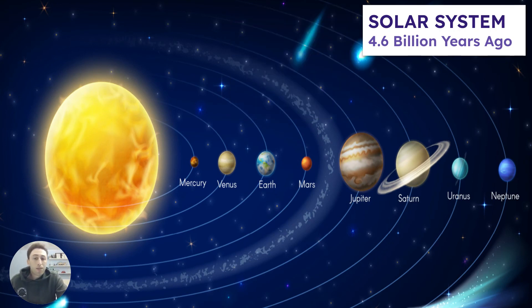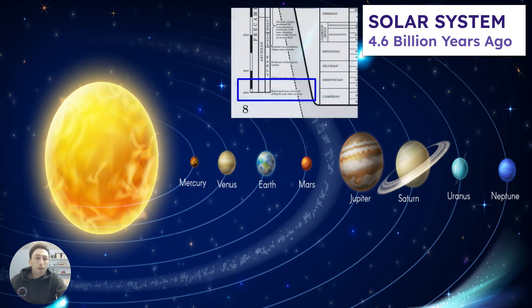Because of gravity, the other planets now orbit around the sun. On page eight of the reference table, it actually tells you the geologic history, and over here you can see 4.6 billion is the estimated time of origin of Earth and the solar system.